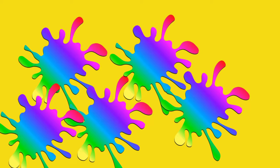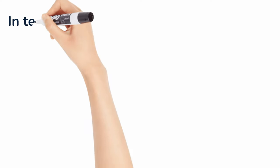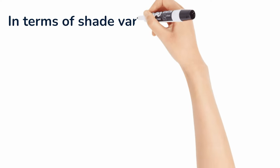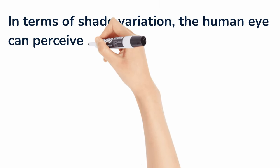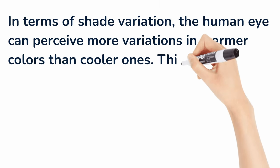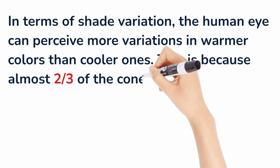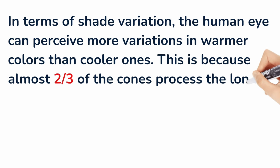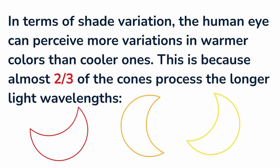Of course, sometimes people are colorblind. In terms of shade variation, the human eye can perceive more variation in warmer colors than cooler ones. This is because almost two-thirds of the cones process the longer light wavelengths — reds, oranges, and yellows.